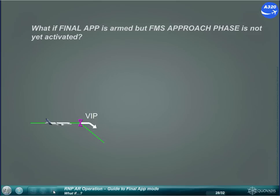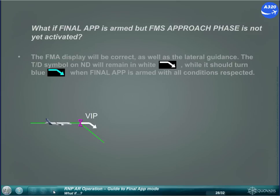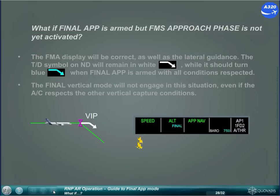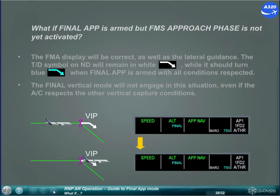What if Final Approach is armed, but FMS approach phase is not yet activated? The FMA display will be correct, as well as the lateral guidance. The top of descent symbol on the ND will remain in white, while it should turn blue when Final Approach is armed with all conditions respected. The final vertical mode will not engage in this situation, even if the aircraft respects the other vertical capture conditions.